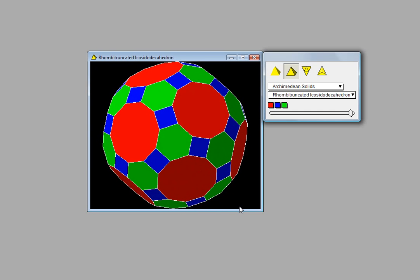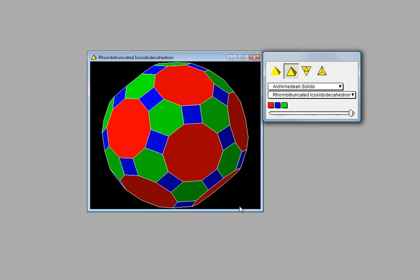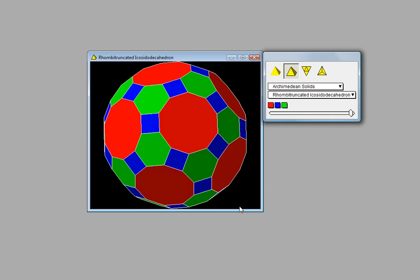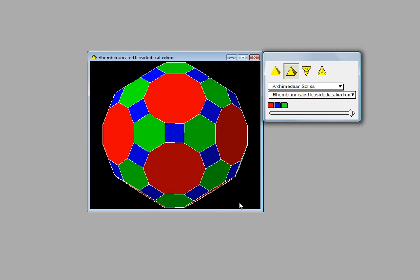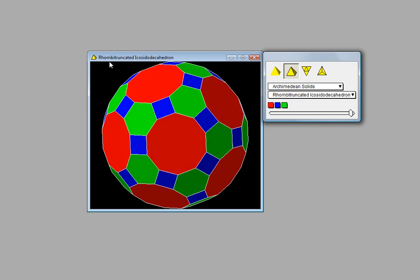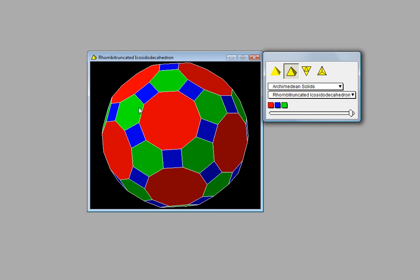Here we have the truncated icosododecahedron. It does have a couple of other names. This particular website calls it the rhomb truncated icosododecahedron.